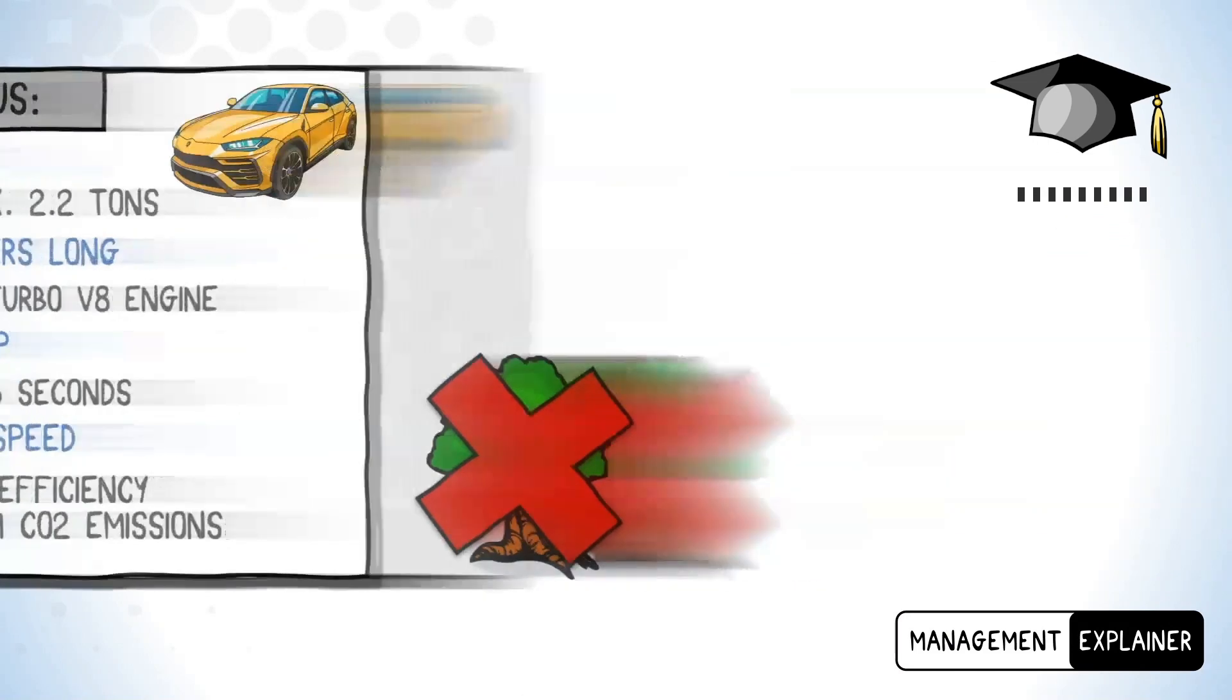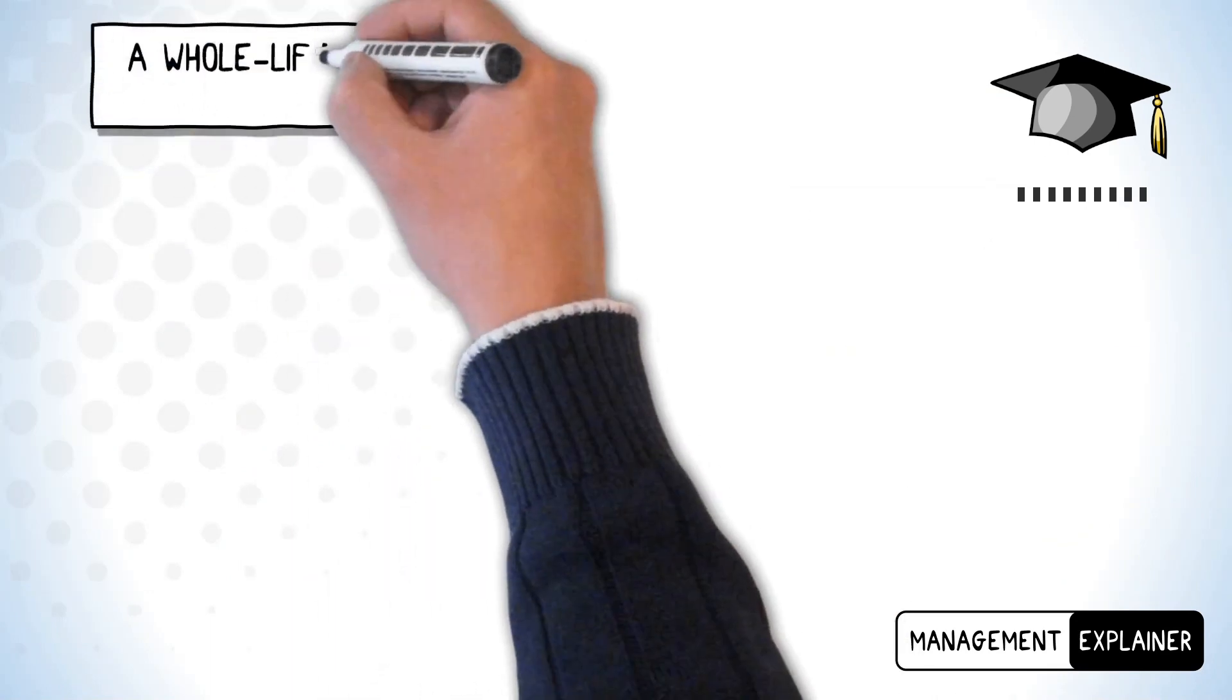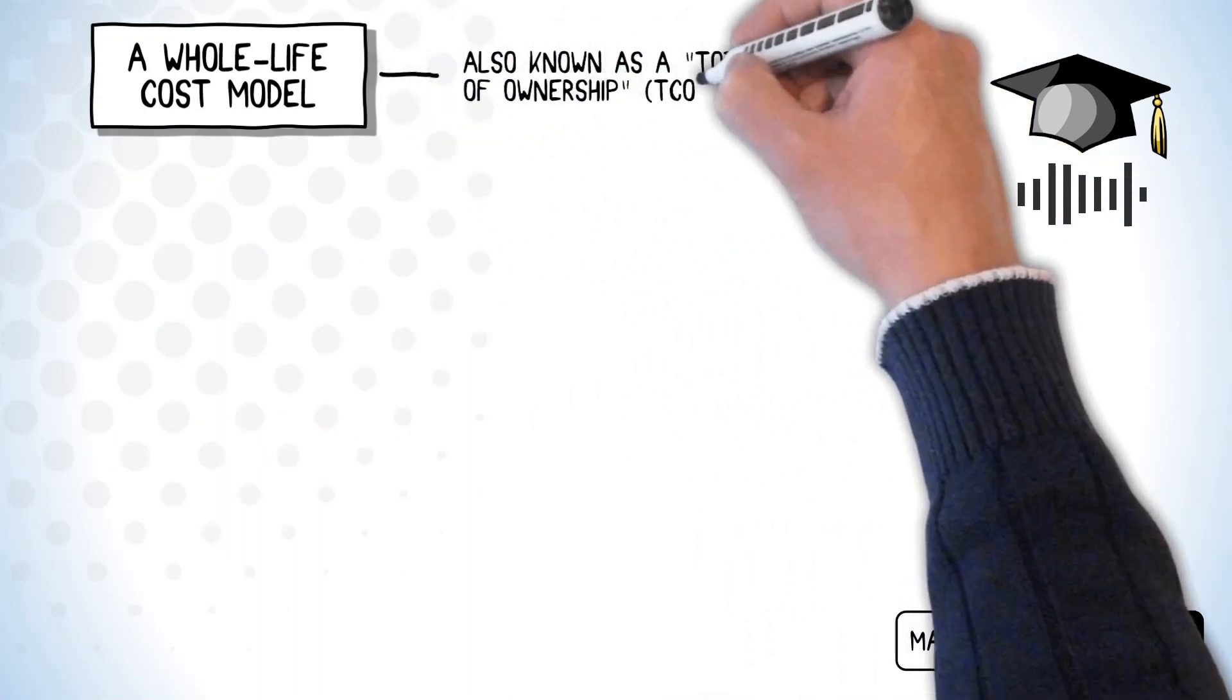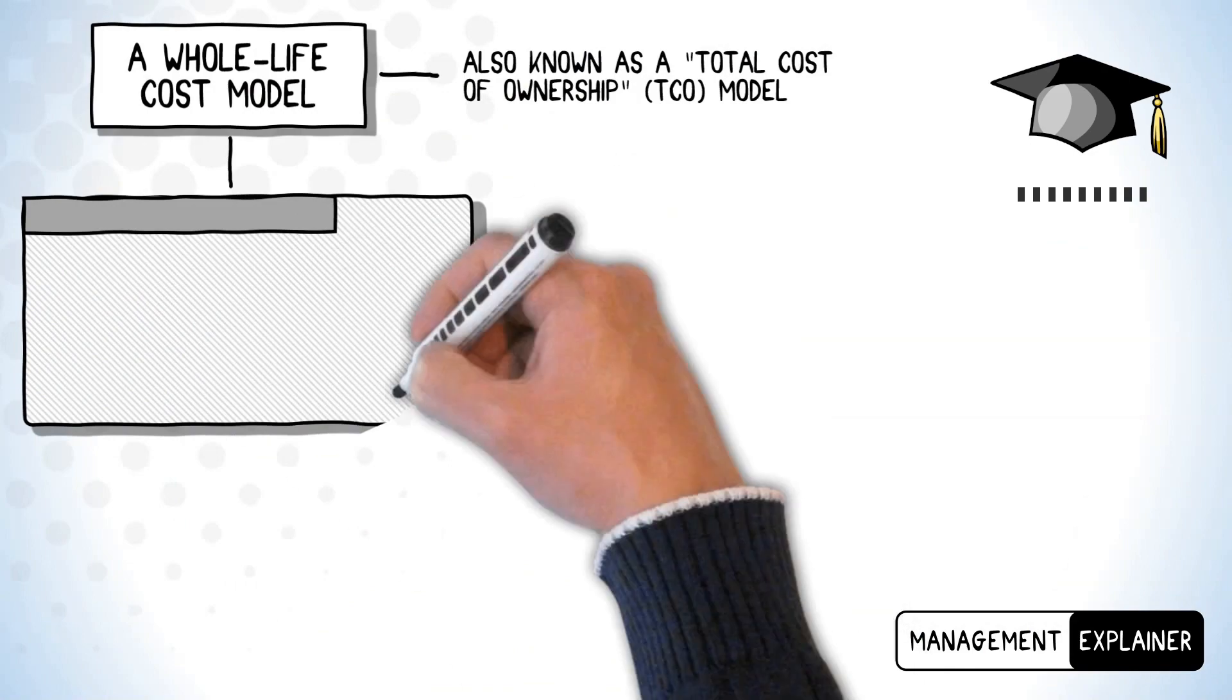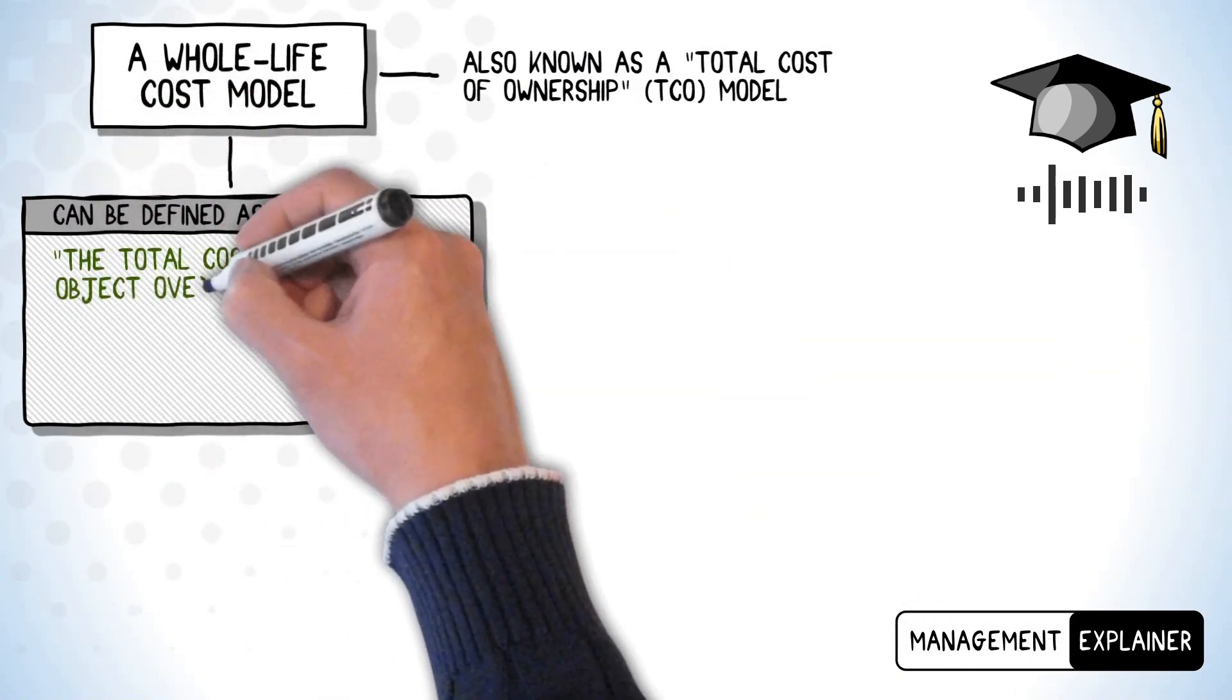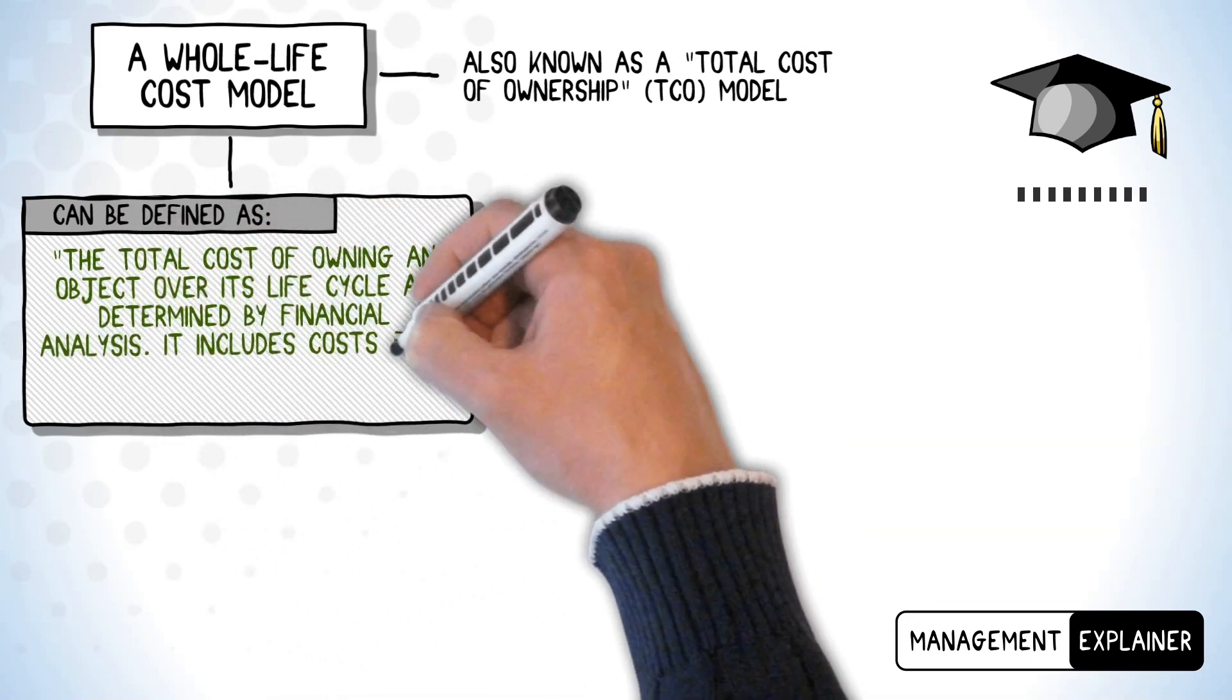Now let's get into the finances of driving a Lamborghini. We'll look at this as a whole-life cost model, which is also known as a total cost of ownership model. This can be defined as the total cost of owning an object over its life cycle as determined by financial analysis. It includes costs from purchase to disposal.